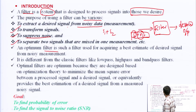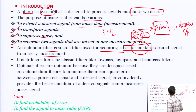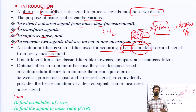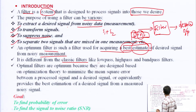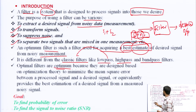An optimum filter is a filter used for acquiring the best estimate of the desired signal from a noisy environment. We can only estimate the signal; we cannot get the exact signal from the noisy environment. It is different from classic filters like low pass filter, high pass filter, and band pass filter.